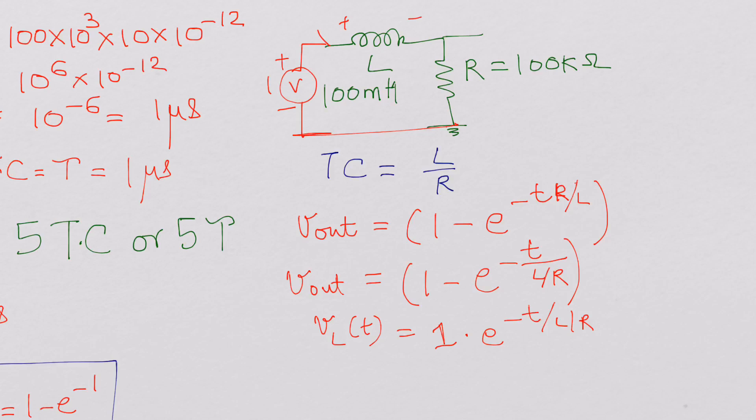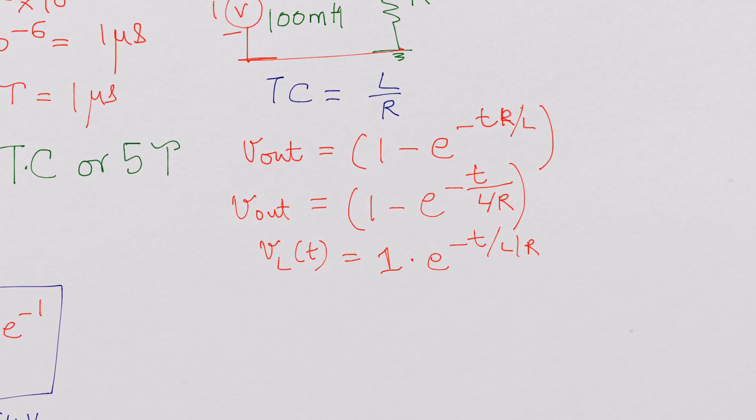So now for this RL circuit, tau is L over R.